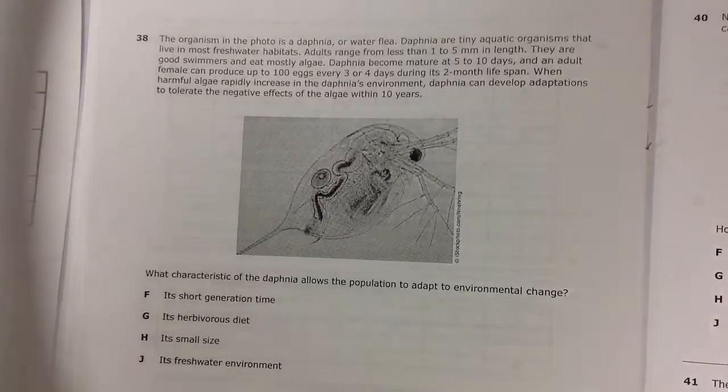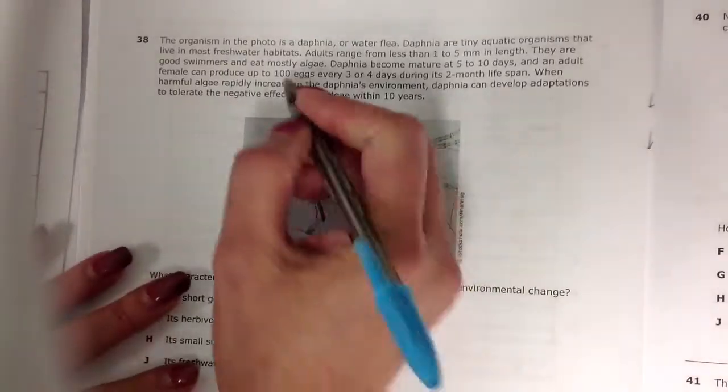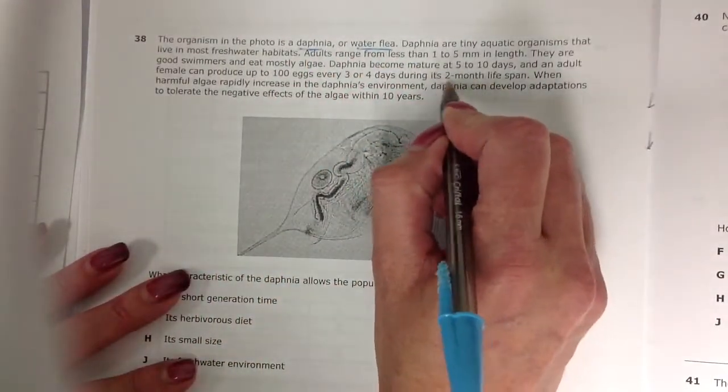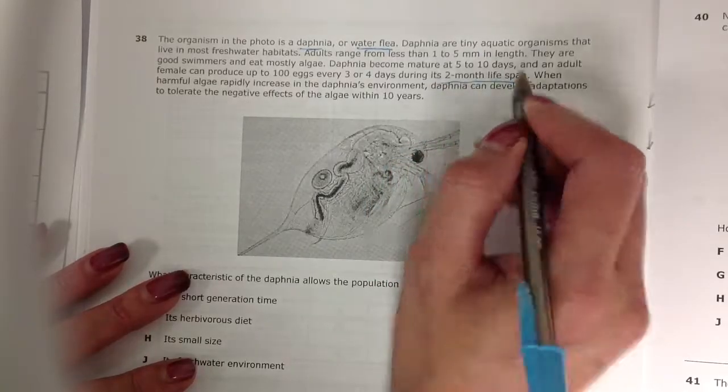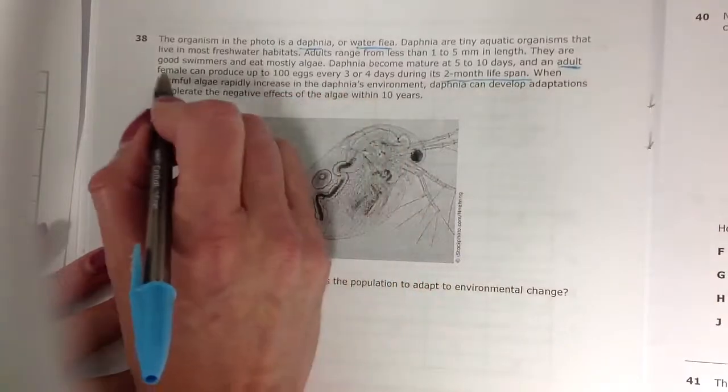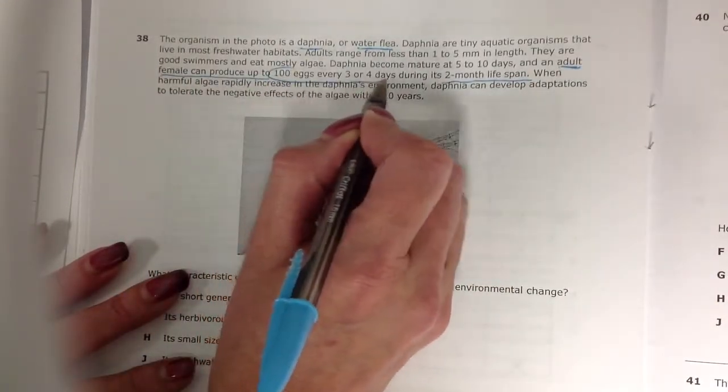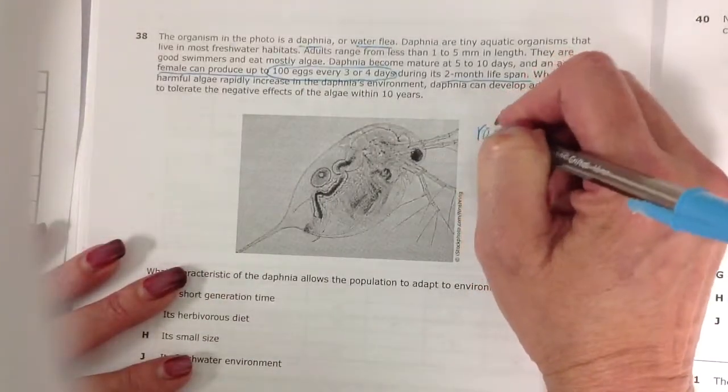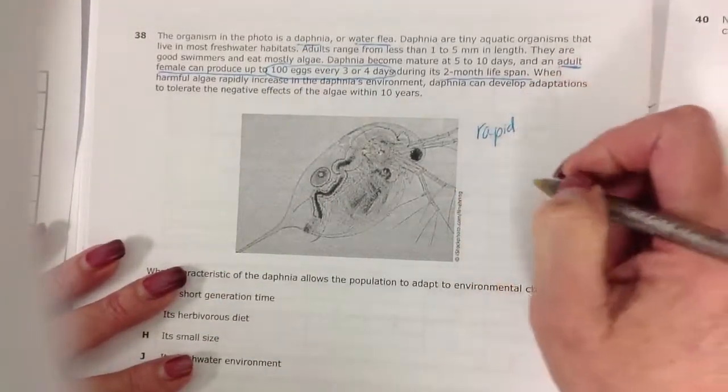So what we're looking at here are the Daphnia, these water fleas. It only has a lifespan of 2 months, but when it reaches adulthood, the female can produce up to 100 eggs every 3 to 4 days during those 2 months. So it has a very rapid reproduction rate.